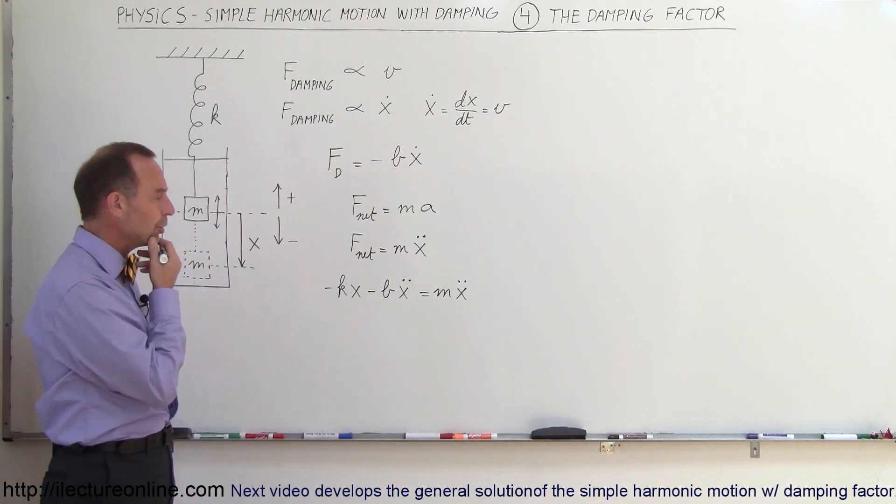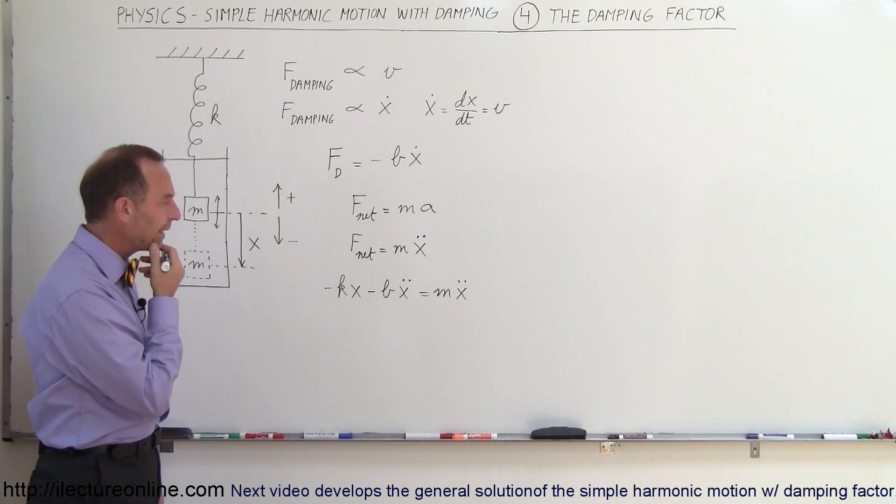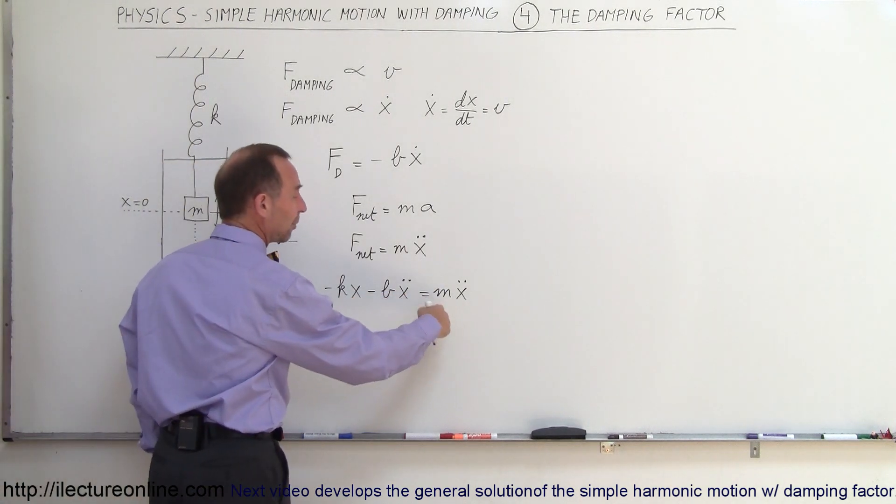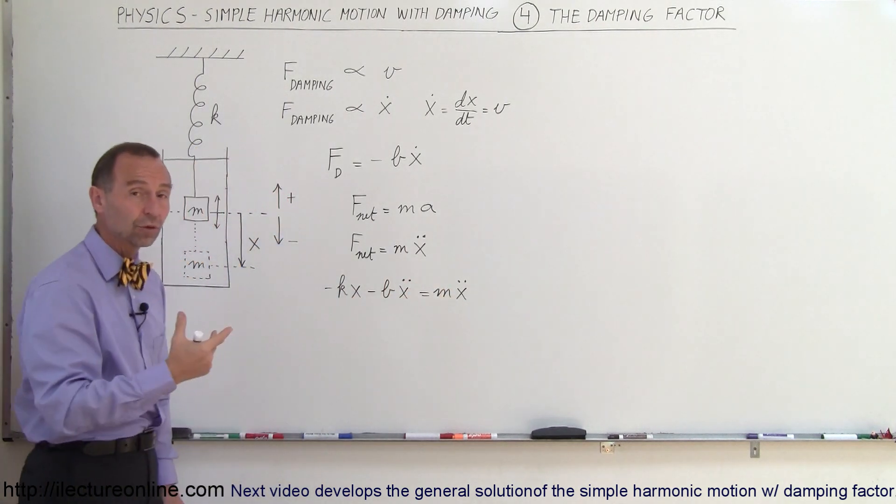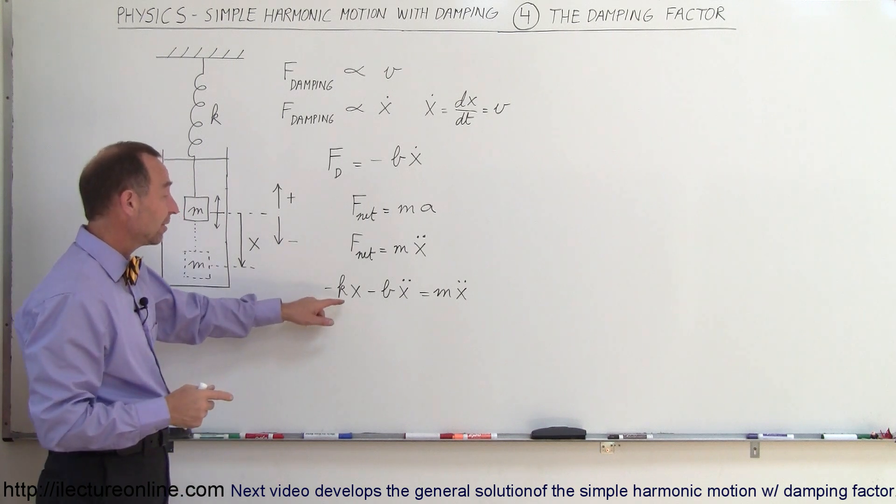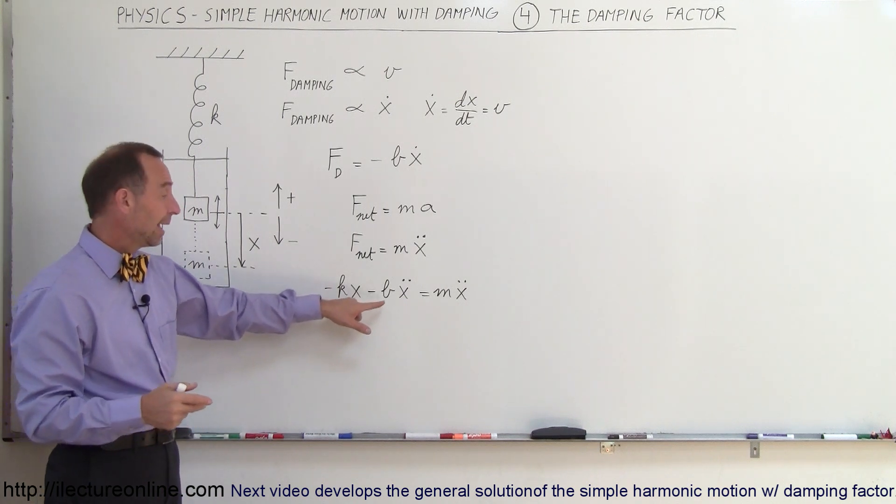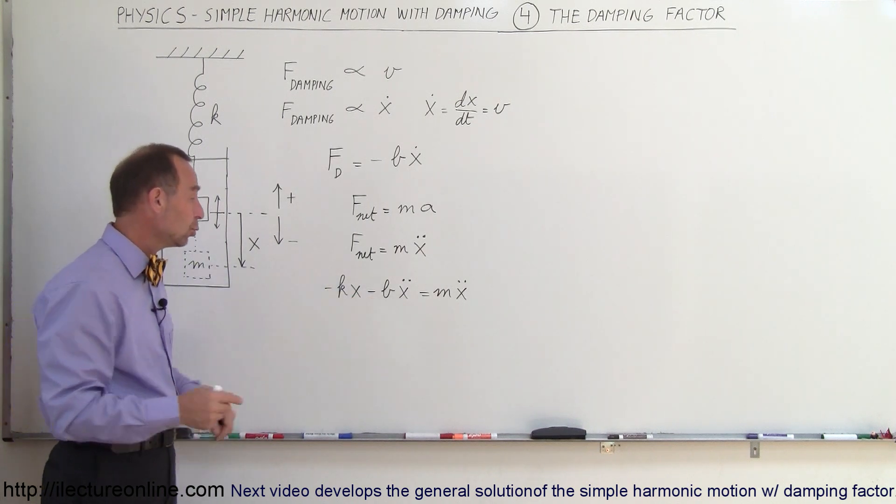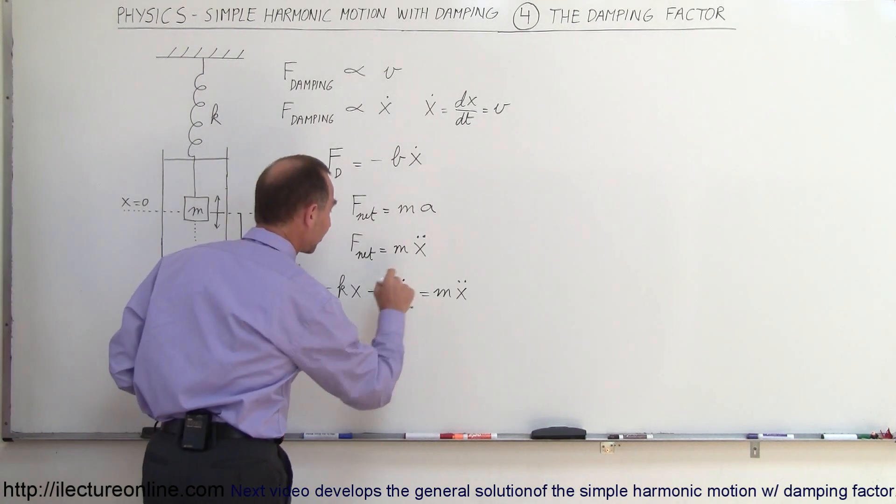Now, think about the units. Notice that mass times acceleration represents force, and force is expressed in Newtons, which means that k times x should be in Newtons, and b times x dot should also be in terms of Newtons. So let's find out what the units for b should be.